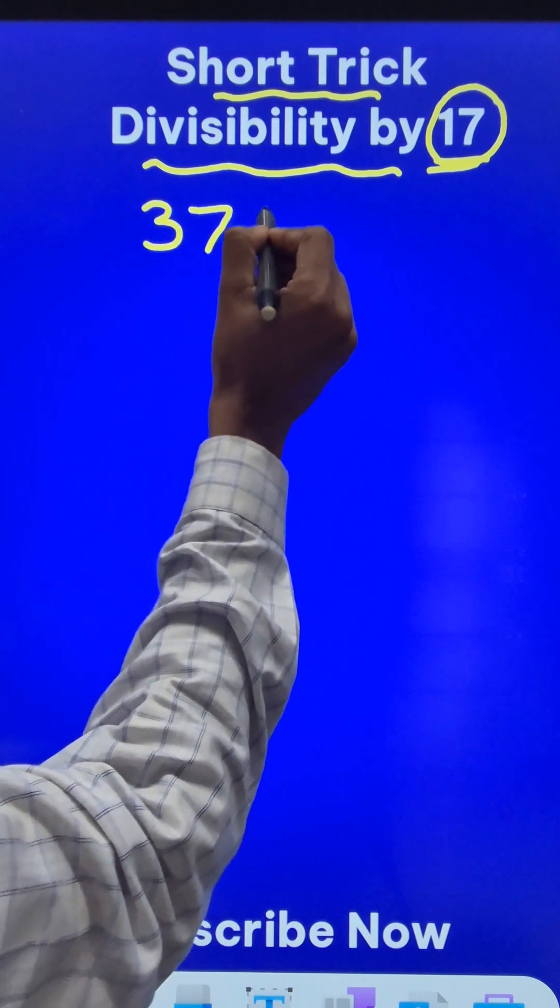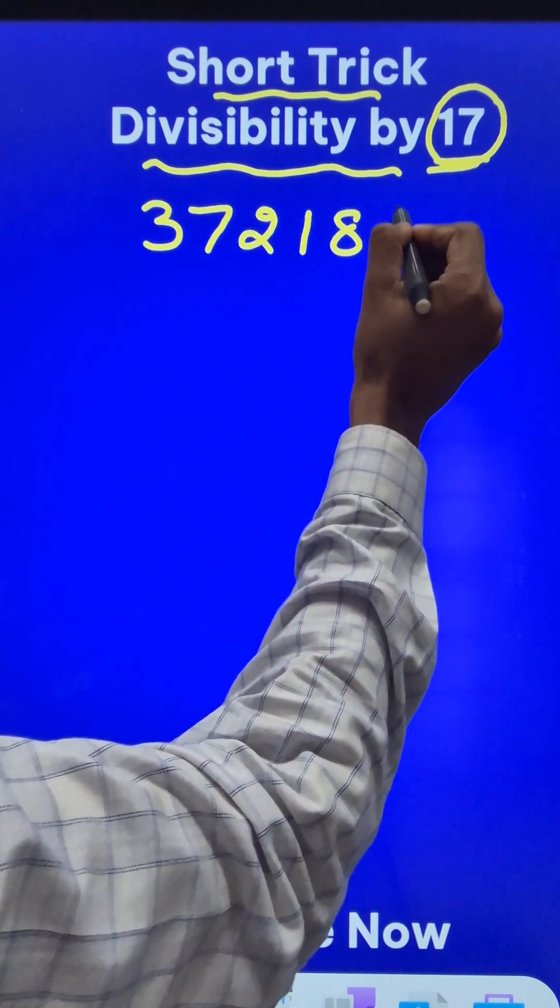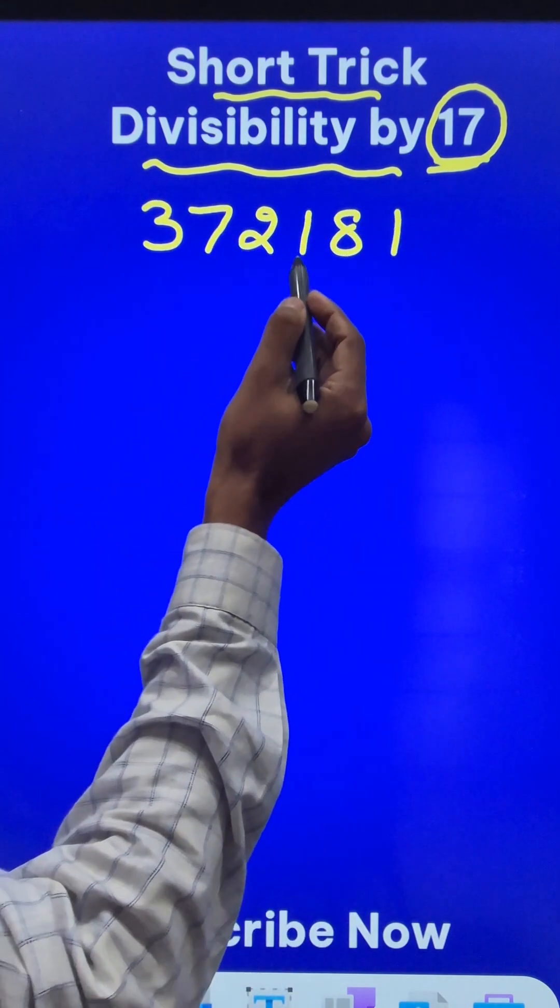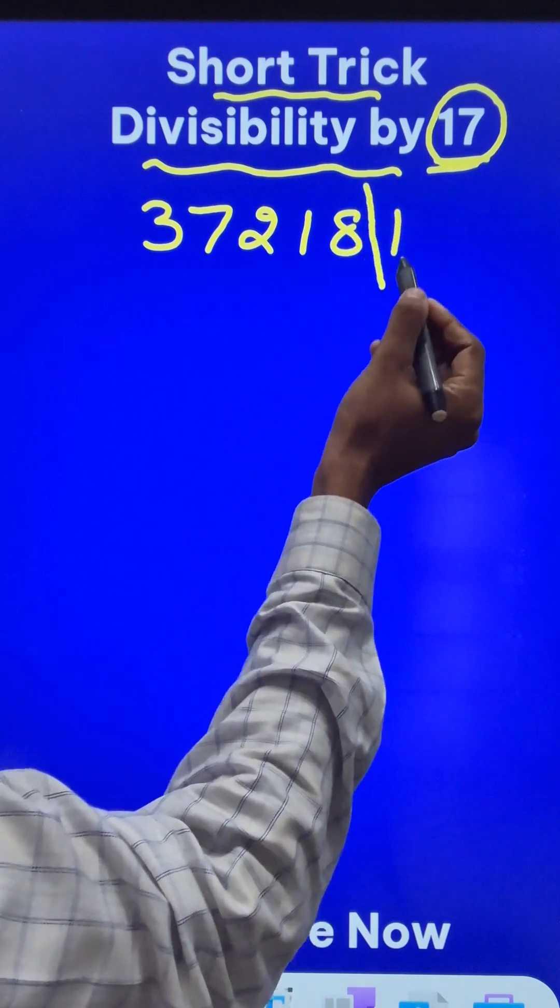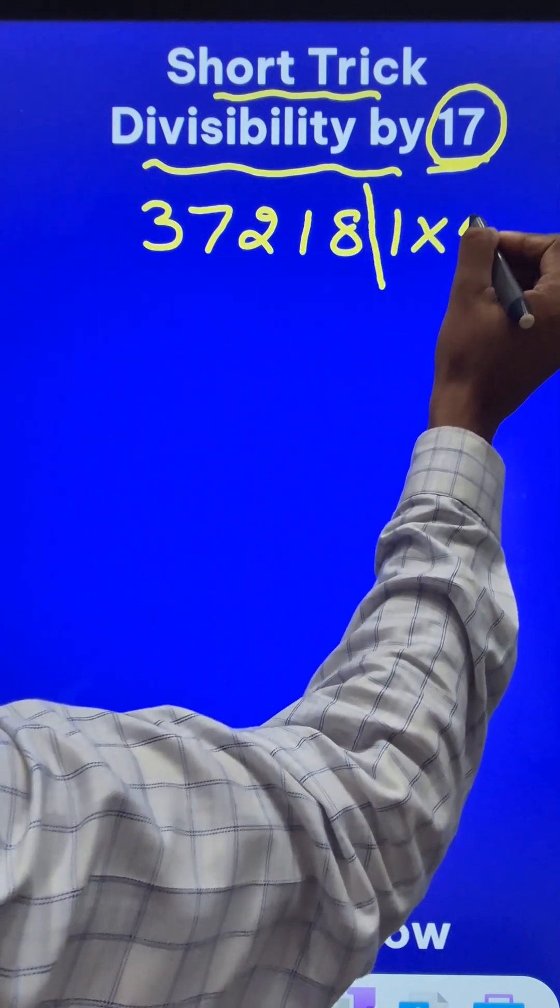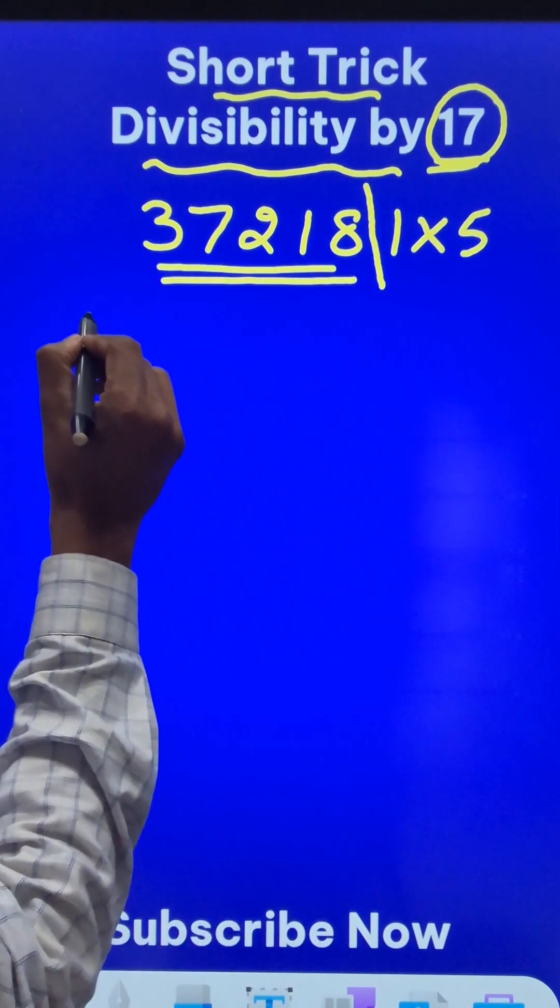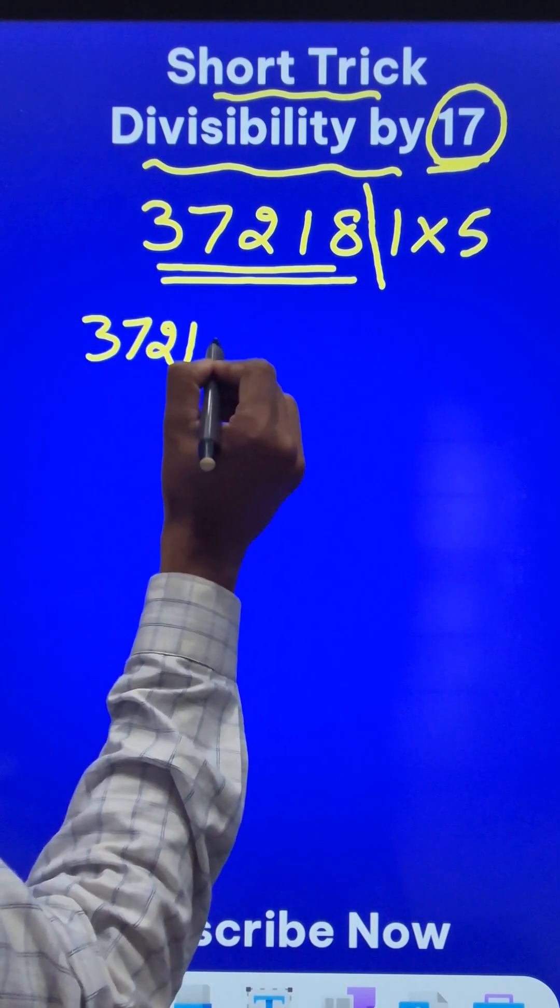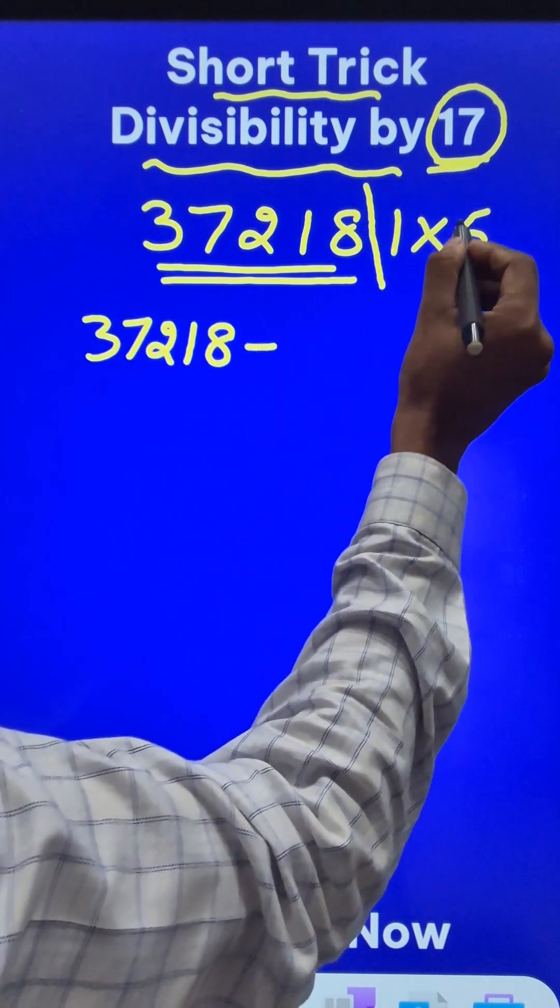Suppose the number is 37218 and I need to check divisibility by 17. Just separate out the last digit, multiply it by 5, write the remaining number 37218 and subtract 1 times 5